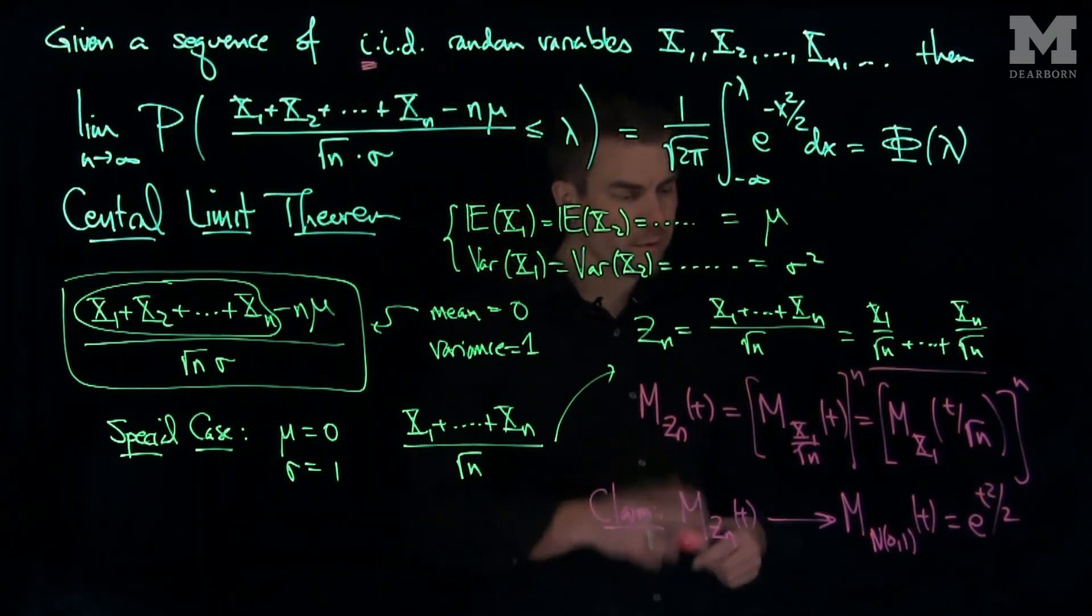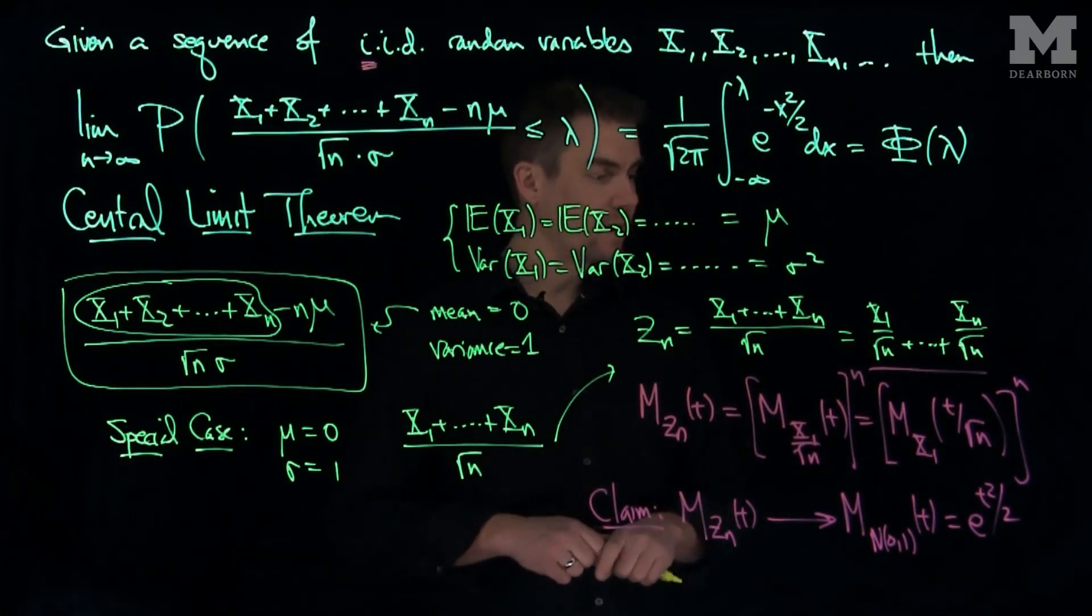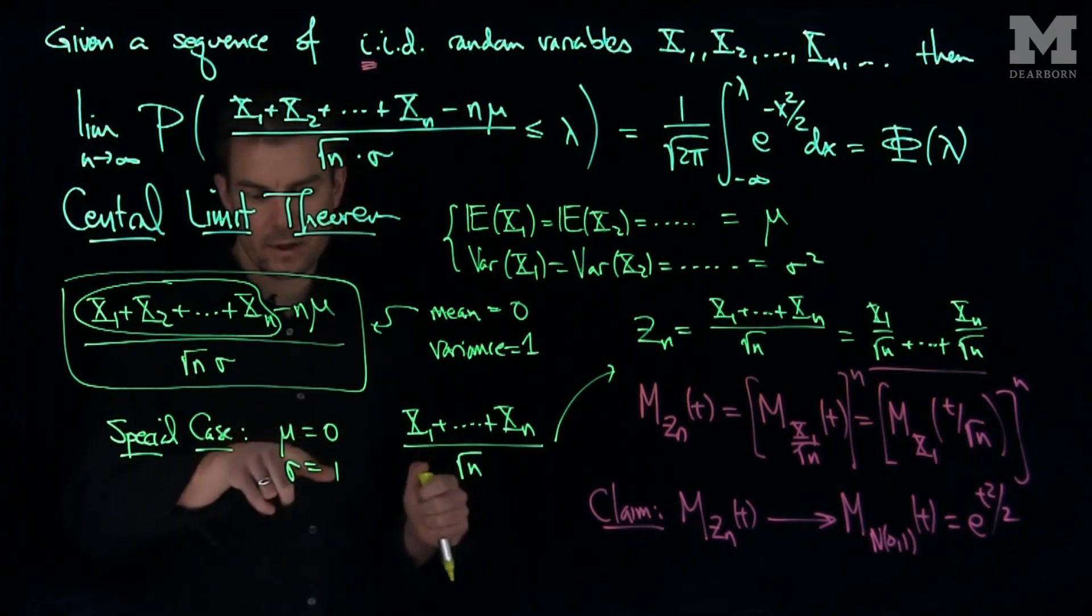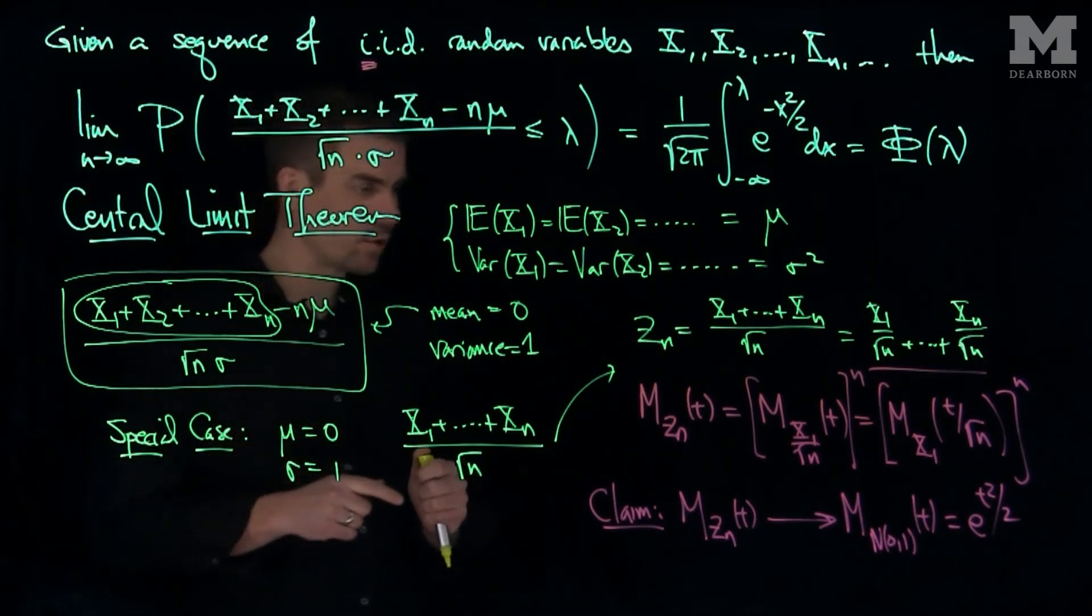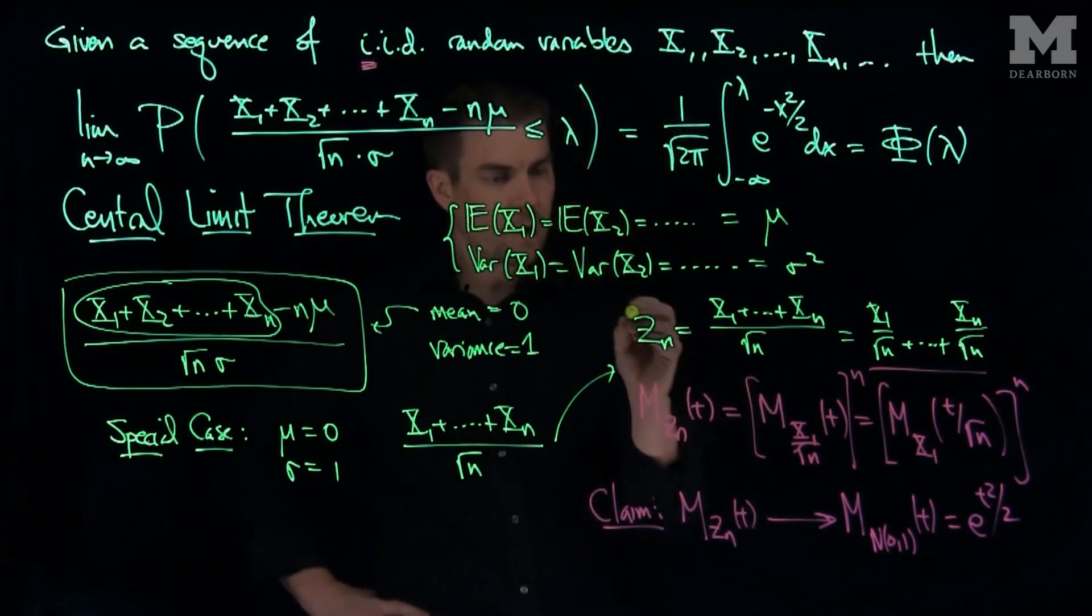And so what we can do to prove this result is we can take the logarithm of this and compute the limit as n goes to infinity, and then use the fact that we have a mean of 0 and a standard deviation of 1. So that is the methodology of the proof.